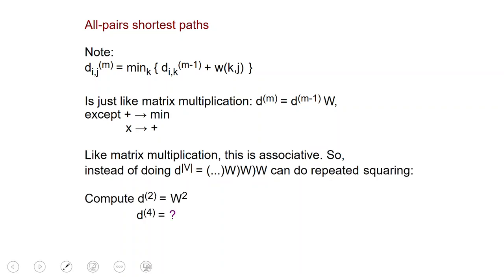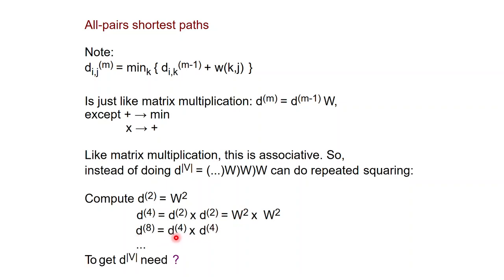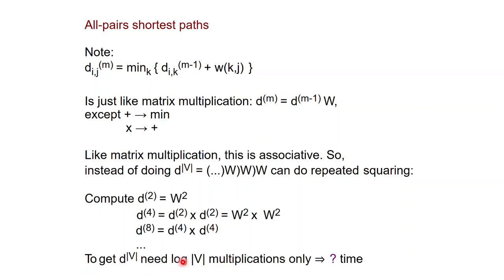You can first compute D superscript 2, which is W squared, then obtain D superscript 4 by squaring D superscript 2, then obtain D superscript 8 by squaring D to the 4, and so on. In this way, if you want to get all the way to D to the V, what you need is log V iterations, and the overall time would be V cubed times log V. So this is a fairly simple algorithm which gets you time V cubed log V — almost V cubed and relatively simple to implement.